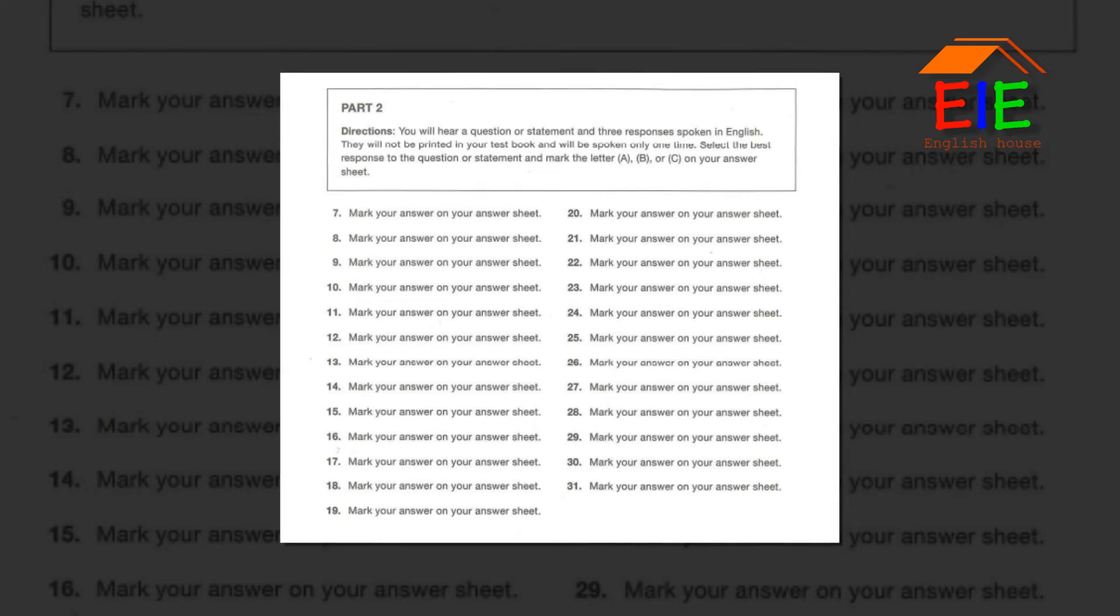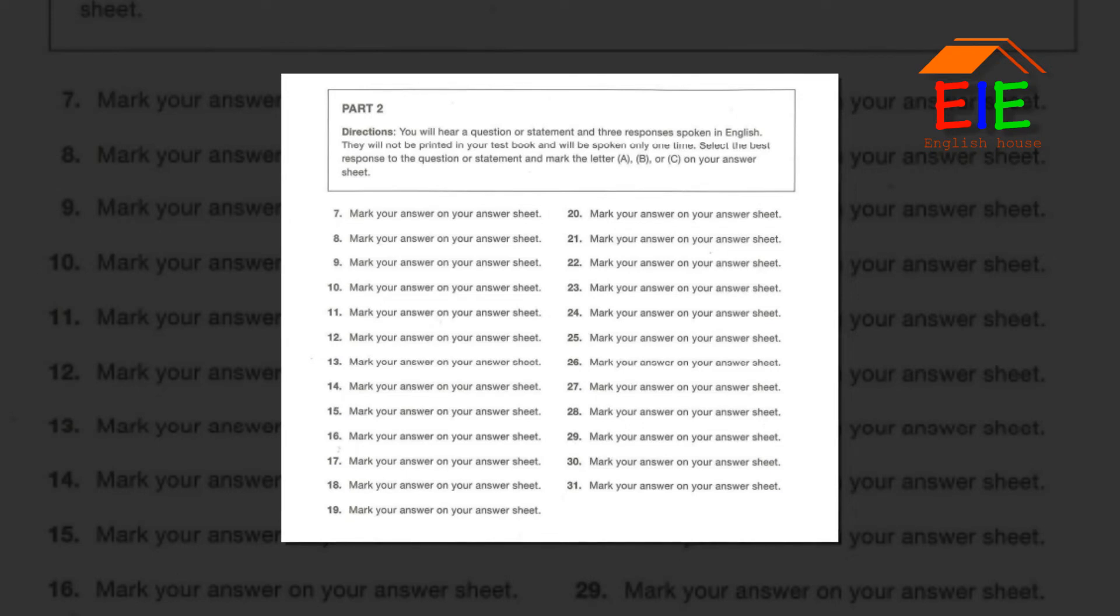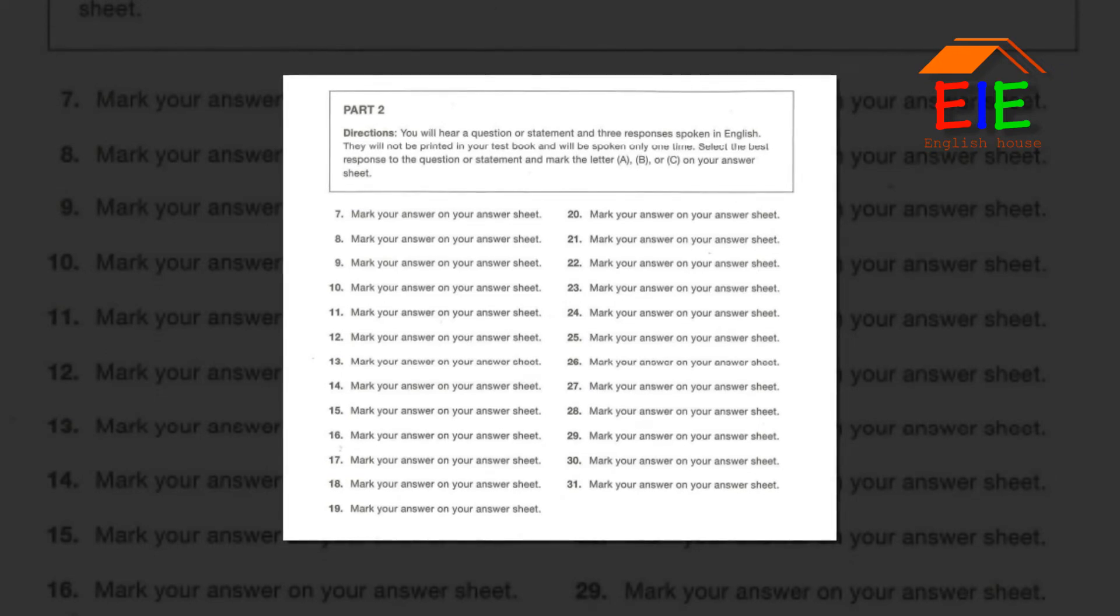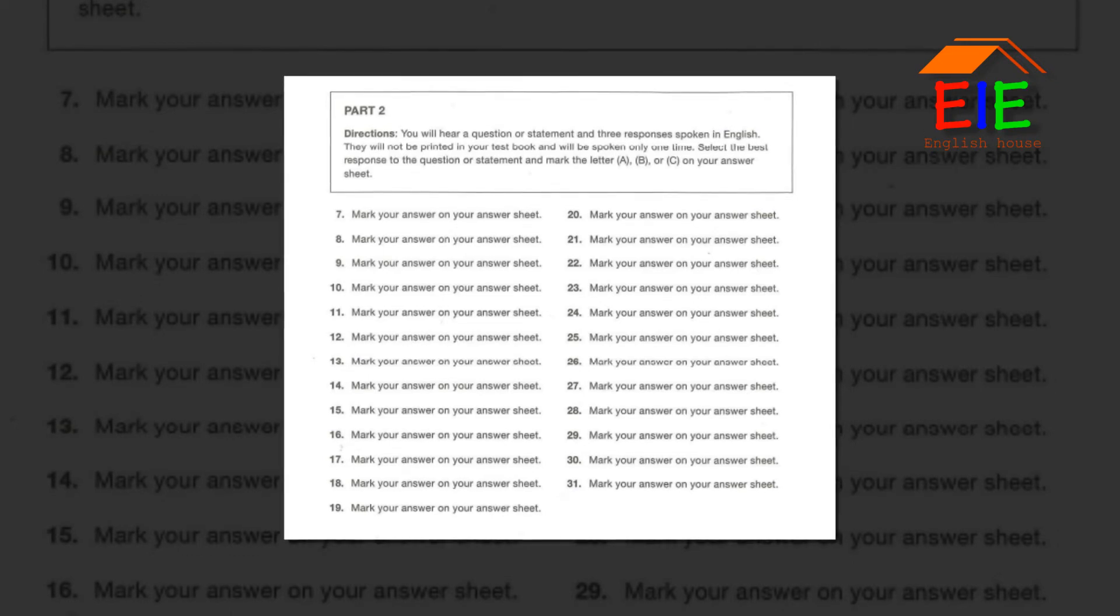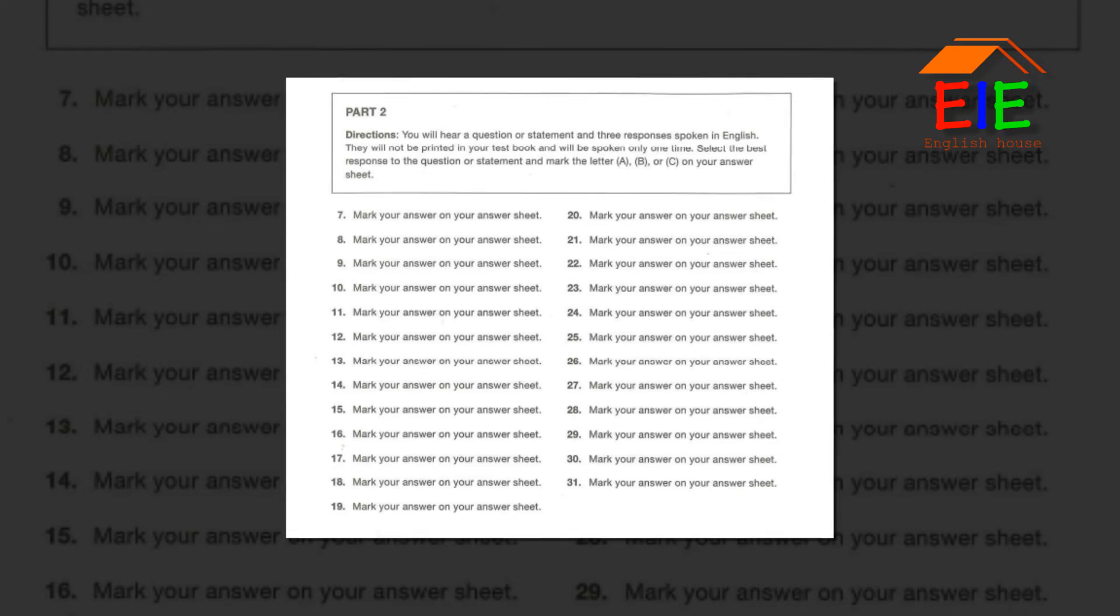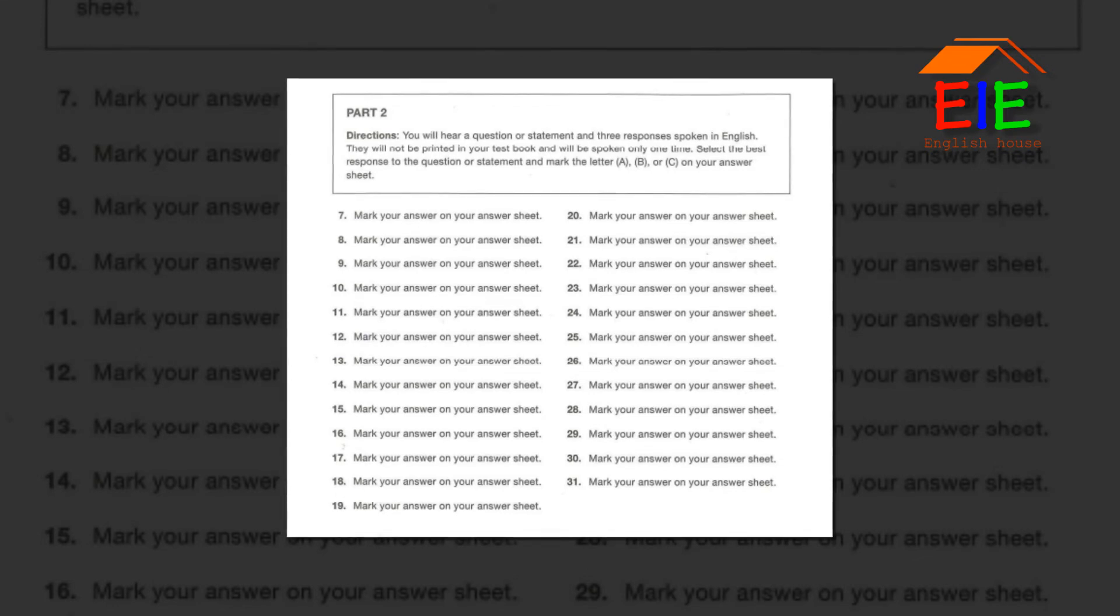Number 22. Do you plan to walk to the convention center? A. At the job fair. B. It was built last year. C. Pablo has a car. Number 23. We're out of flyers for our weekend sales event. A. A newspaper article. B. Is her flight on time? C. There's a printer in my office.